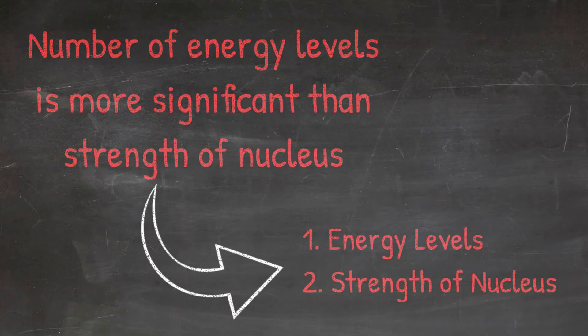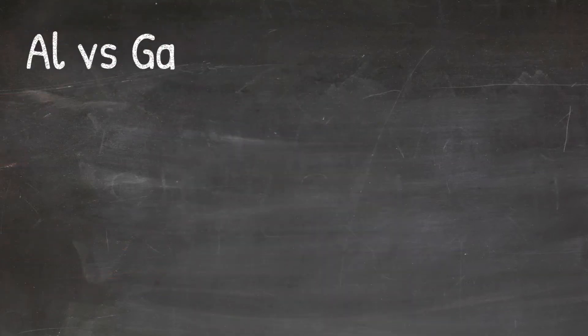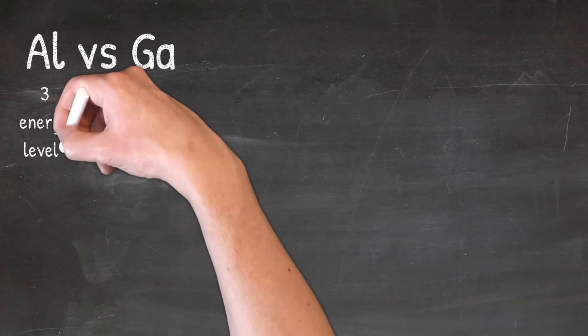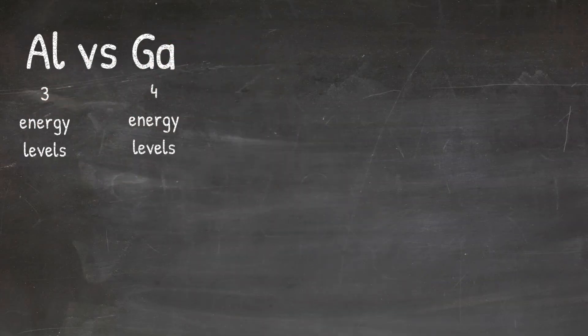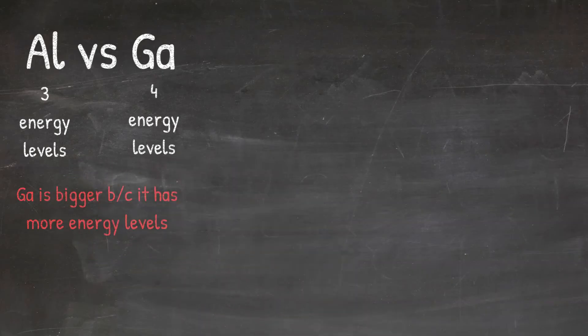Now let's look at some examples. In our first example, we'll compare aluminum to gallium and try to figure out which one is bigger. The first thing you want to look at is the number of energy levels. Aluminum has three energy levels while gallium has four. This means that gallium is going to be bigger because it has more energy levels.